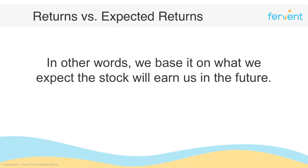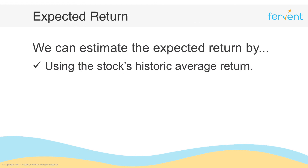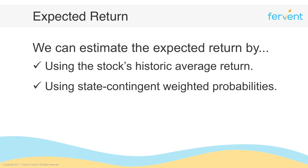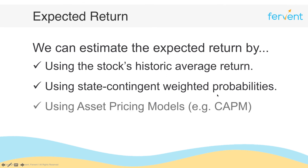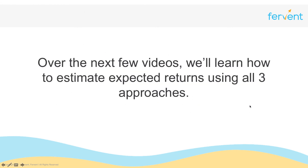Given that we're investing for the future, we want to base decisions on the expected return. There are three main ways to calculate expected returns: first, using the stock's historical average return — probably the easiest approach; second, using state-contingent weighted probabilities, which sounds fancier than it really is; and third, using asset pricing models such as the CAPM, or Capital Asset Pricing Model. We'll go over each of these in the next few videos.